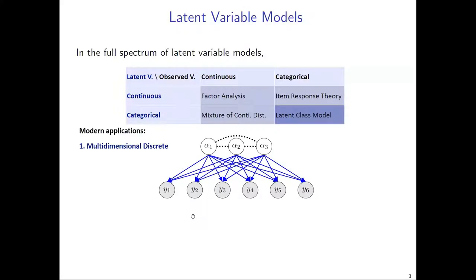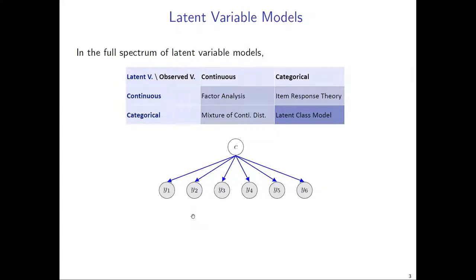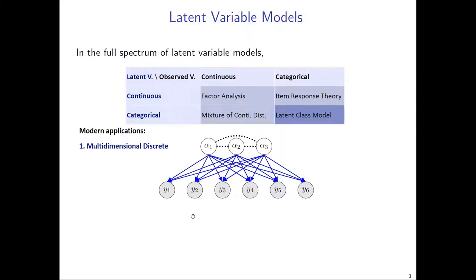Such a simplistic structure is not flexible enough to model modern complex datasets. There are several desirable features for modeling modern data. One is to adopt a multi-dimensional latent structure so that we can capture multiple different aspects of data. For example, I was initially motivated to work on latent variable models from an educational application where different latent variables can capture the different skills that an exam wants to measure. Therefore the multi-dimensionality of the latent skills is usually of interest to practitioners.